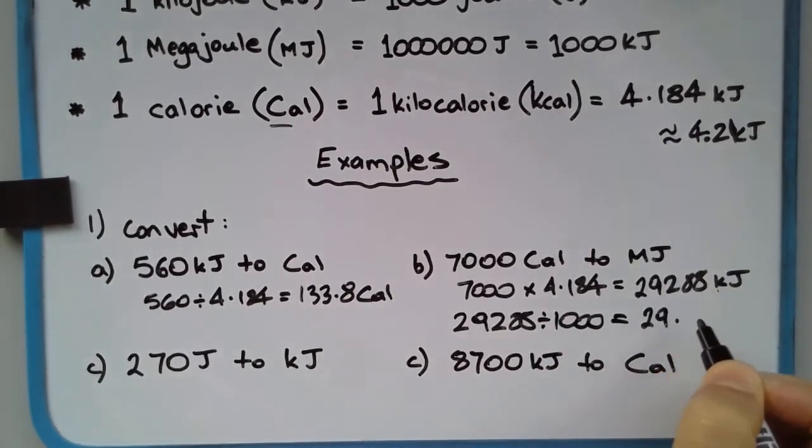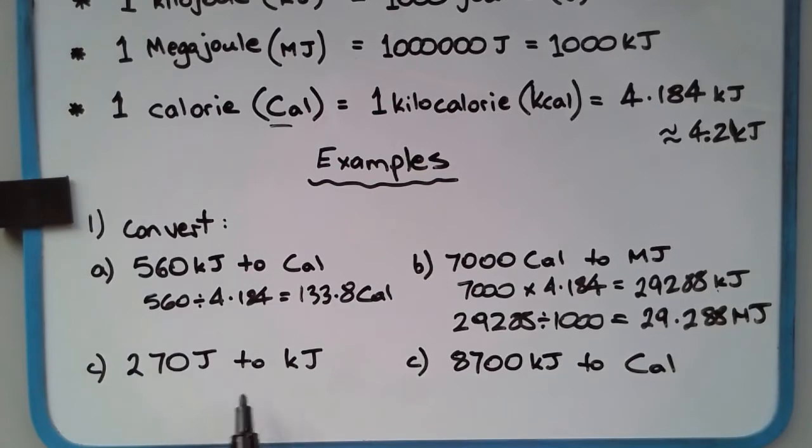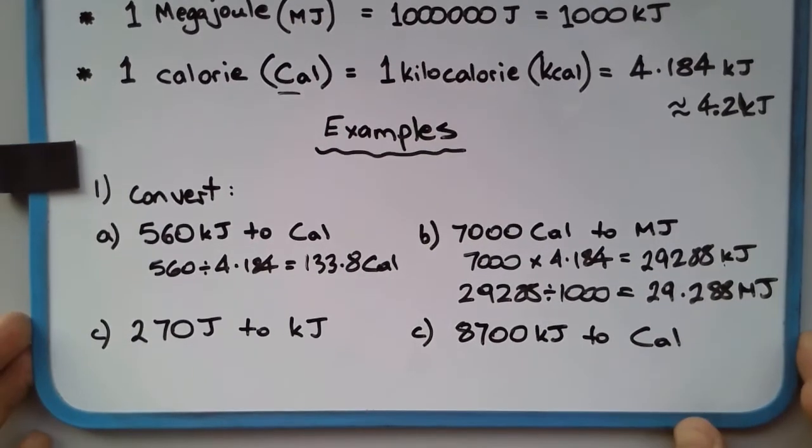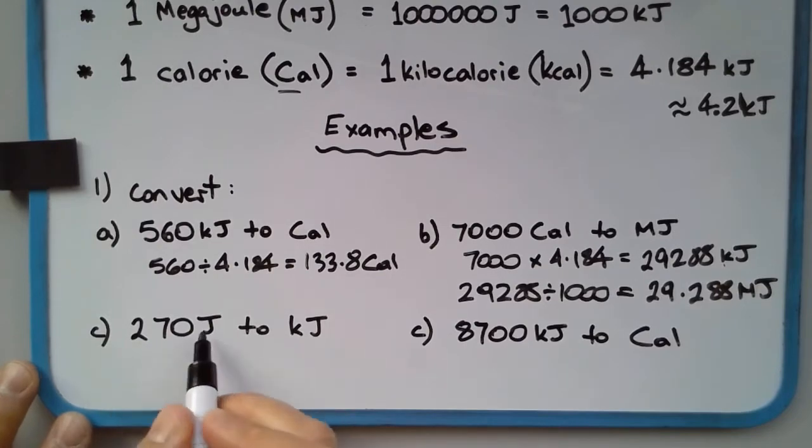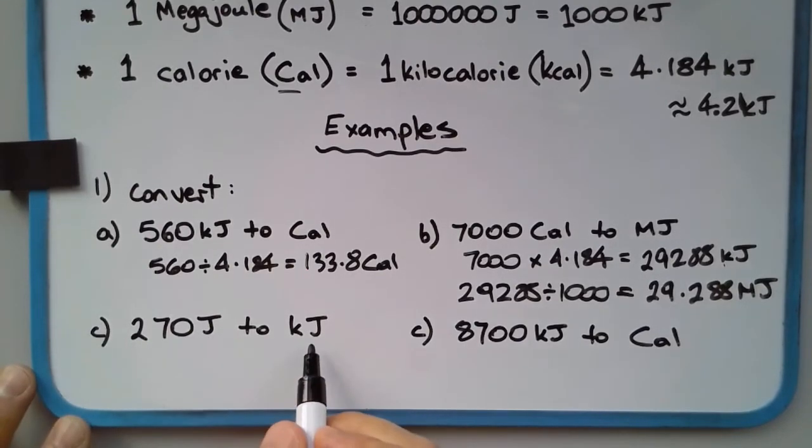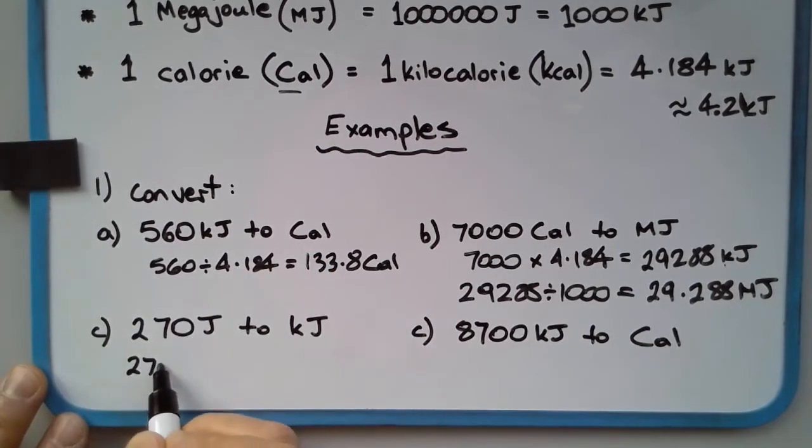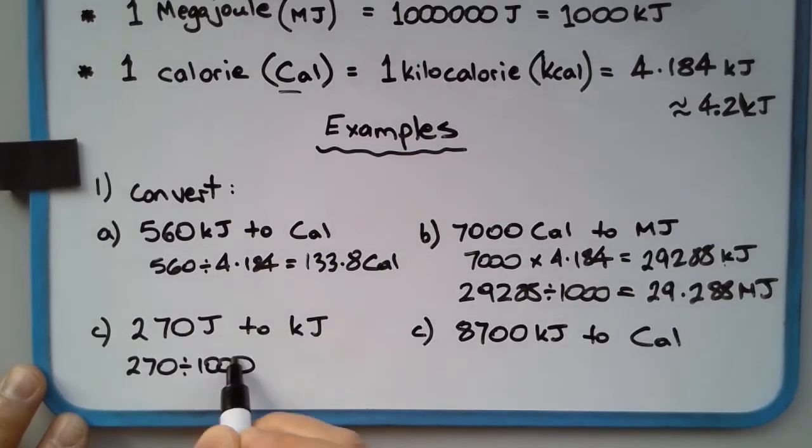Part C: 270 joules to kilojoules. That one's a little bit easier. 270 joules divided by a thousand—we're going from a small unit to a large unit. That's what kilo means. 270 divided by a thousand gives us 0.27 kilojoules.